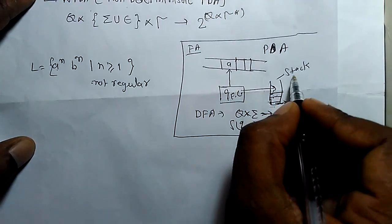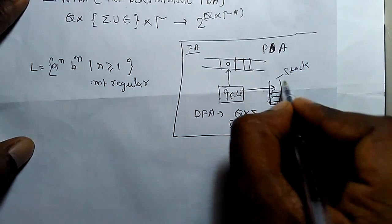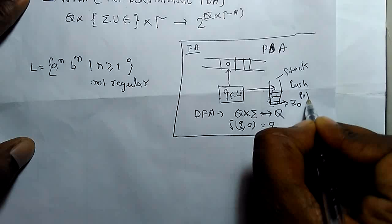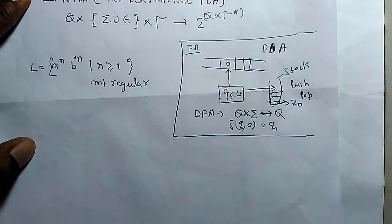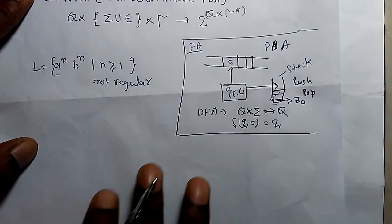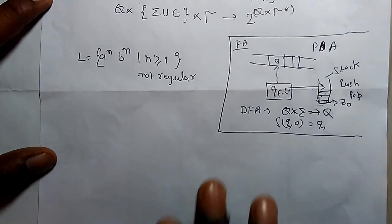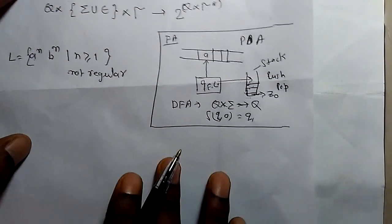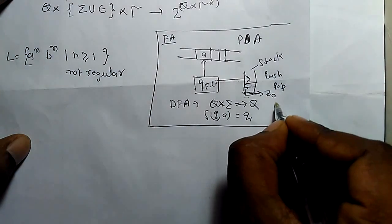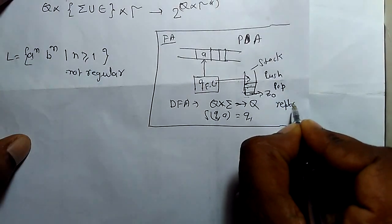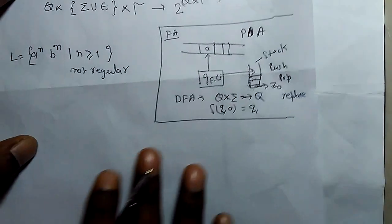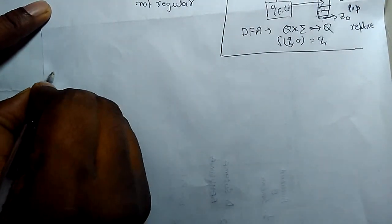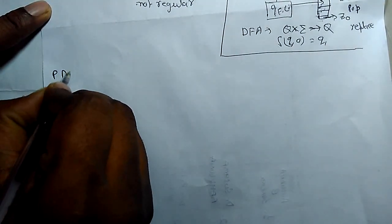In the stack, we know there are operations of push and pop. There is also a third operation used in pushdown automata, which is replace. Let's understand PDA operations.